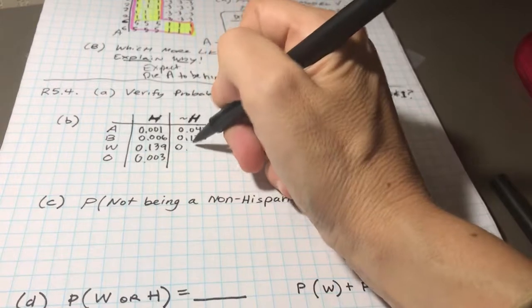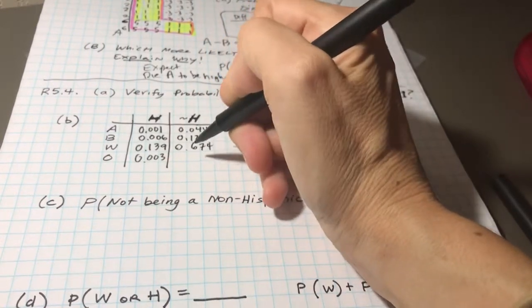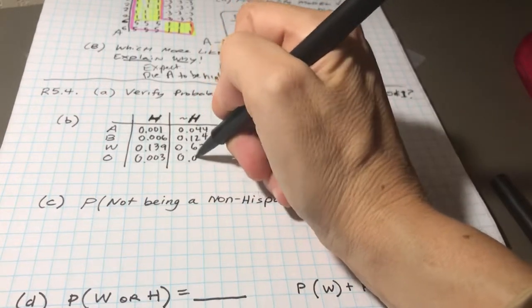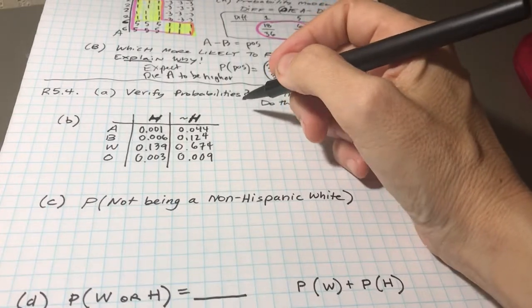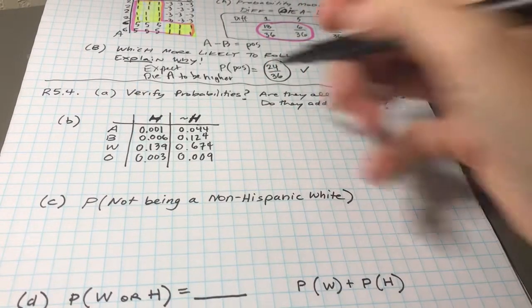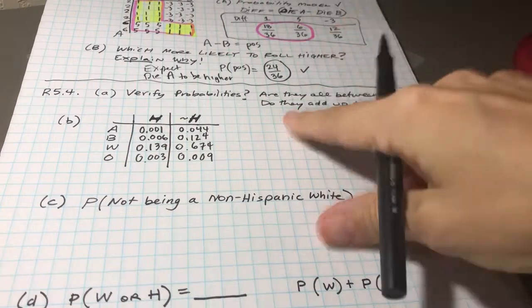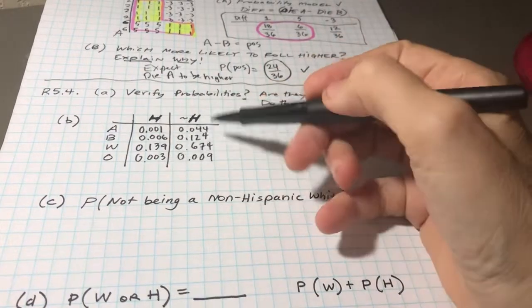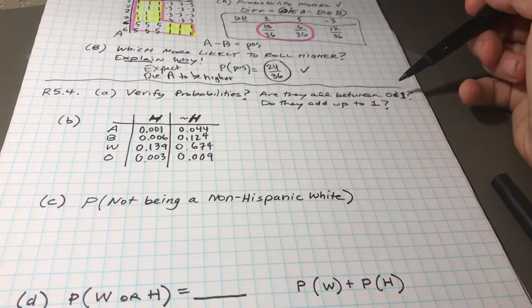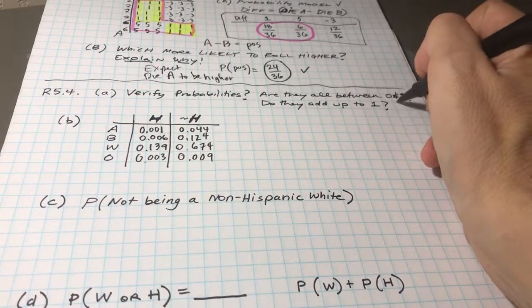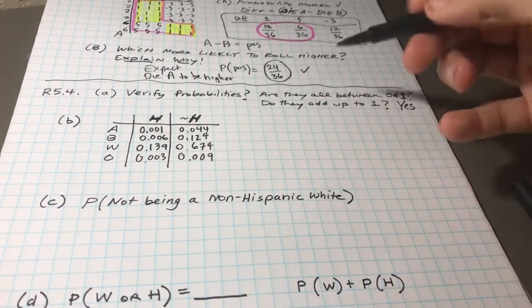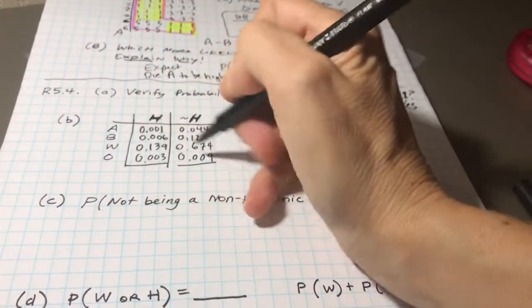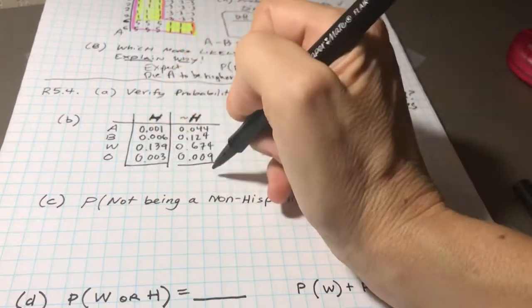First off, the question is: is this a legitimate assignment of probabilities? So our rule of probabilities is a probability would need to be between 0 and 1. So we're looking through here saying to ourselves, are all of these between 0 and 1? And it looks like that would be yes.